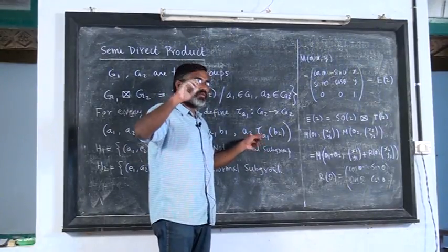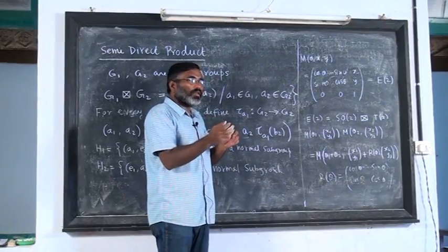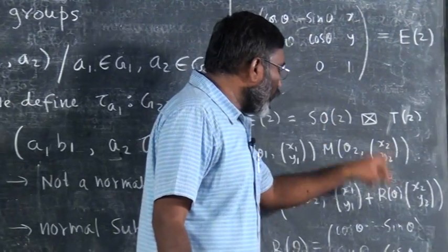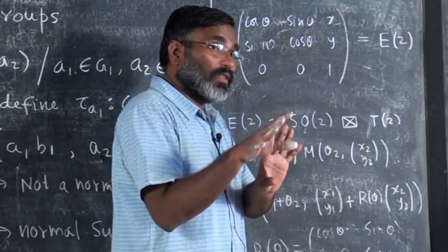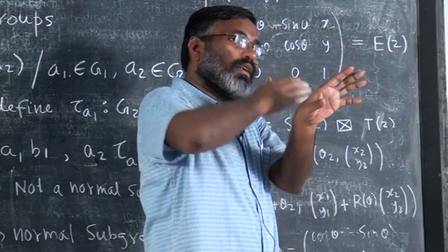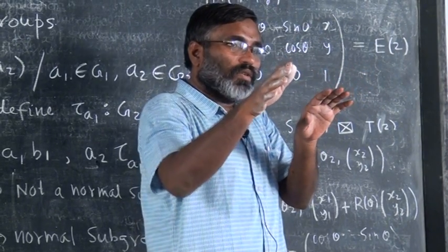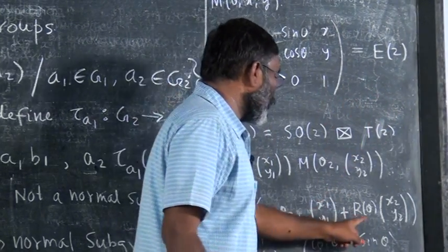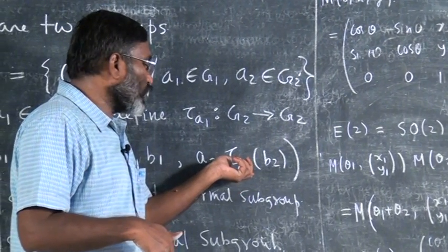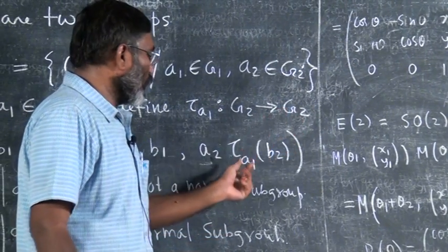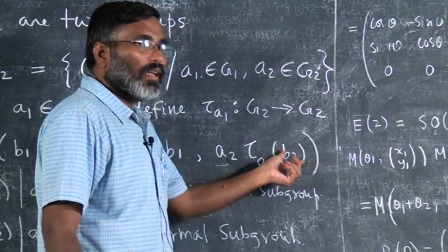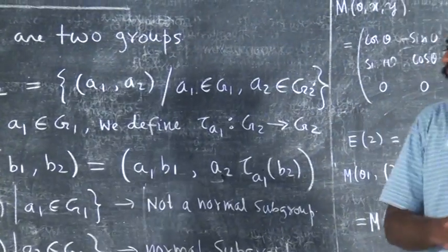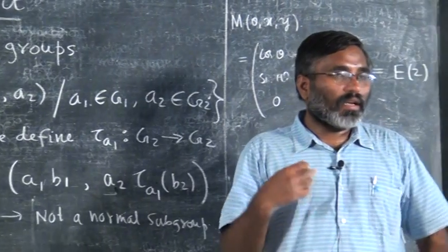This is an automorphism from G2 to G2. For every element θ — the parameter of SO(2) — I define a map R(θ), which is a rotation. A vector is rotated and then added to the previous vector; you rotate the vector and add that to the initial vector. In the same way, for a1 in G1, you define an automorphism τ_{a1}: G2 → G2, where τ_{a1}(b2) is an element in G2.